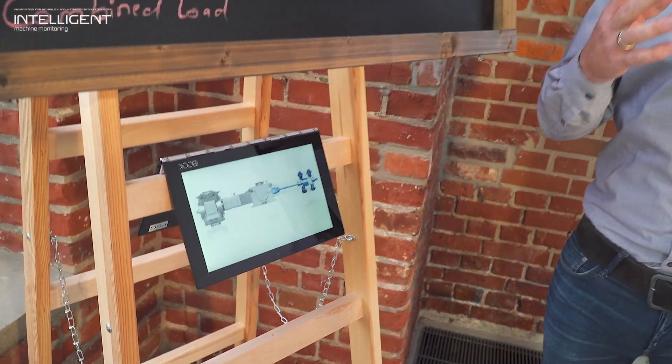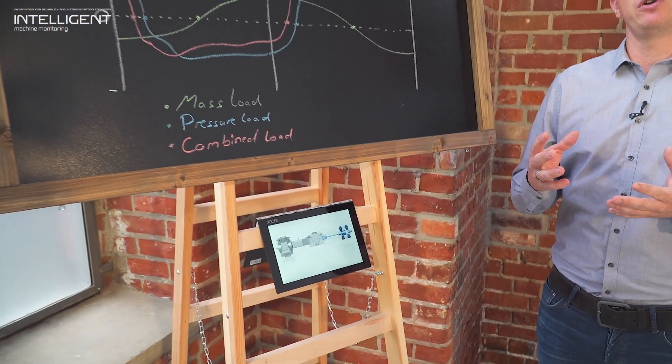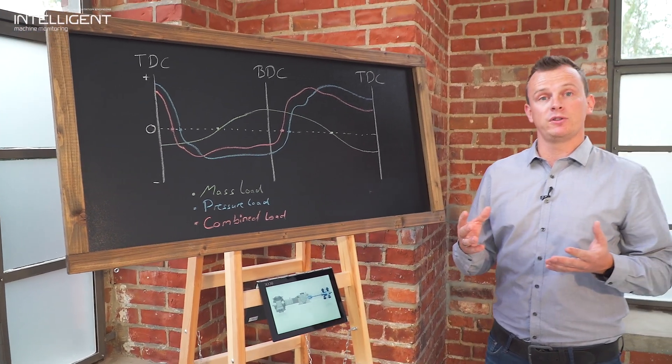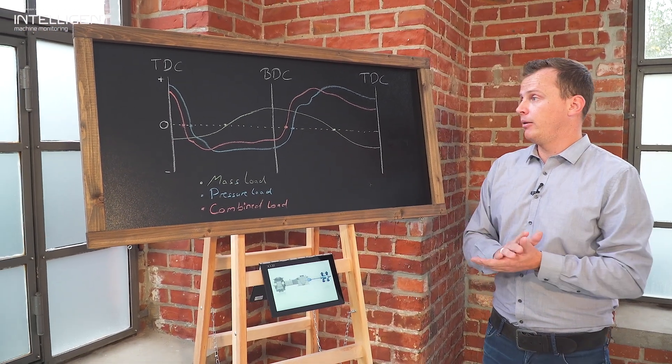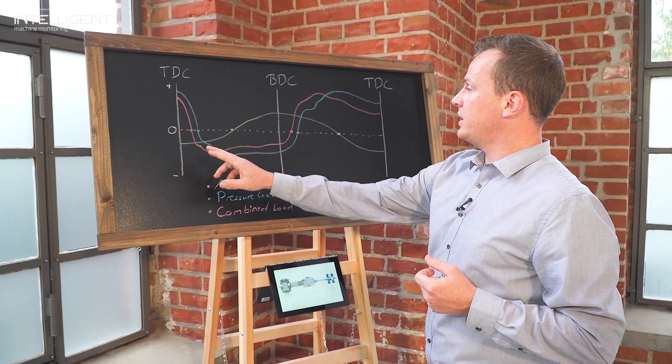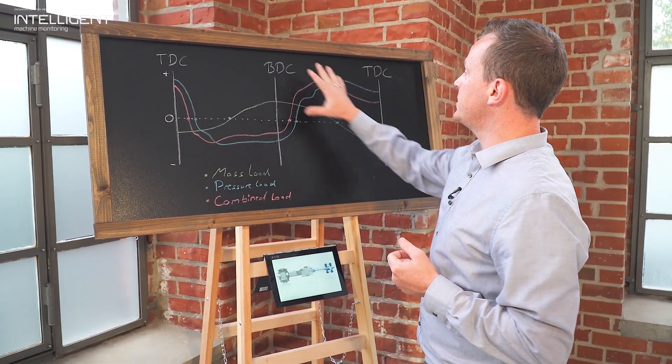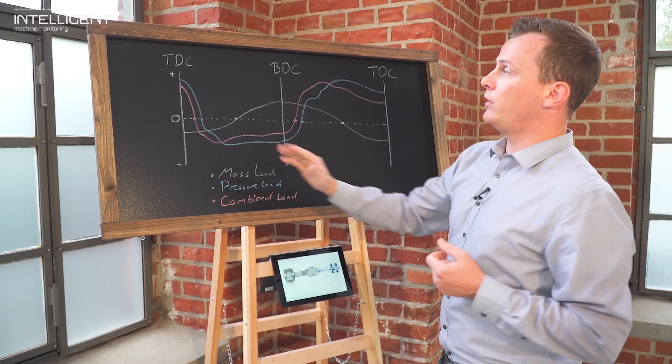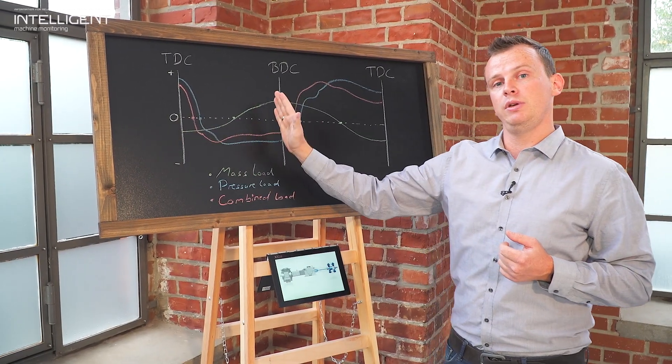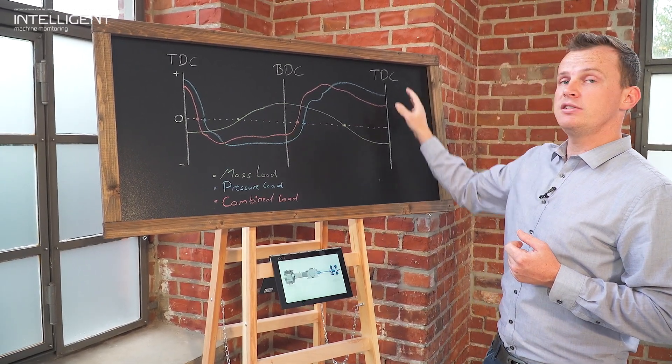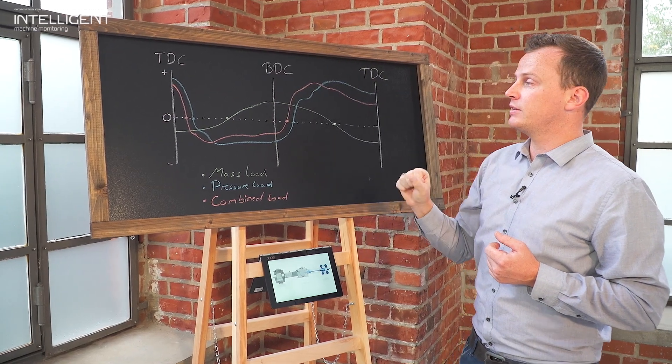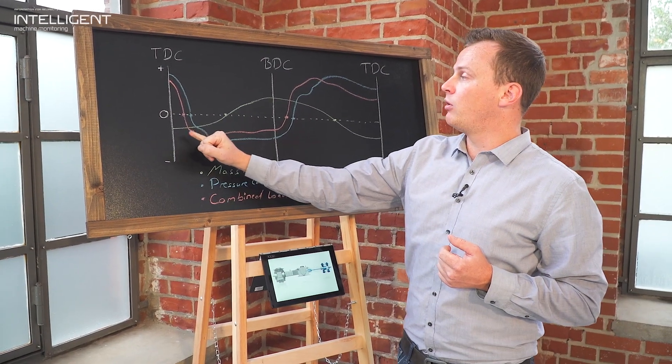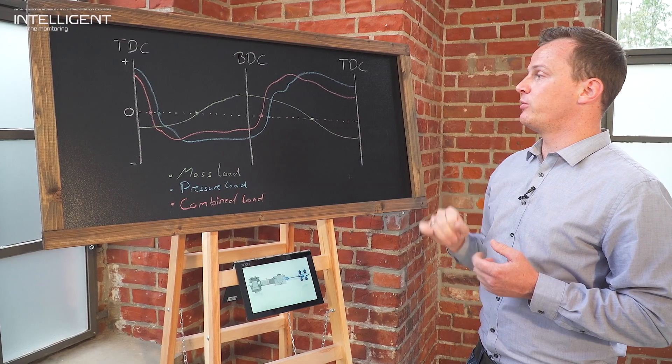And depending on how big a piston rod is, we have different forces inside that complete picture. So we start here with our mass forces. What we see here is one revolution. We start from TDC, go to BDC and go back to TDC, so top dead center and bottom dead center. And in green you see our forces which are caused from the masses.